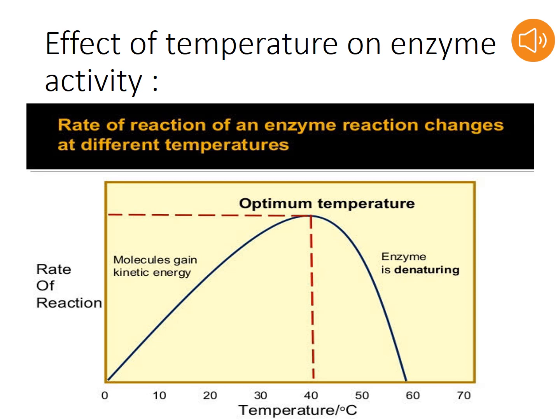The rate of reaction of an enzyme reaction changes at different temperatures. Here you can see a graph in which 37 degrees centigrade is the optimum temperature. The red line depicts the optimum temperature. If the temperature is above this, then the enzyme gets denatured.